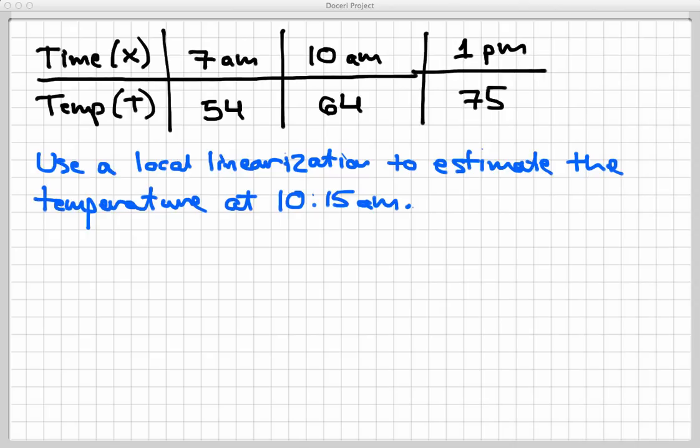Suppose I want to estimate the temperature at a point where it wasn't measured. This is kind of like a forecast in some ways. We're going to use a local linearization to estimate the temperature right at 10:15 a.m.